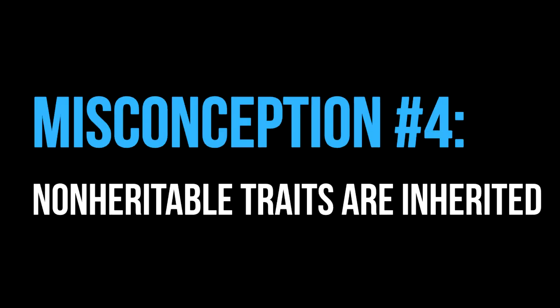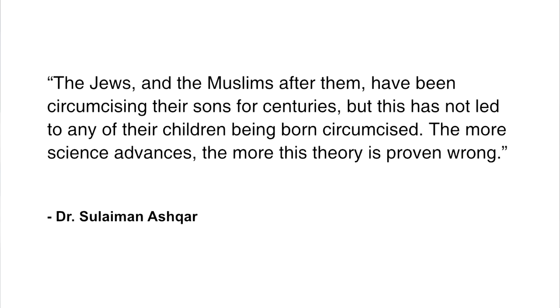Number four: mistaking non-heritable traits for heritable ones. Let's look at another quote from the scholar. He said, 'The Jews and the Muslims after them have been circumcising their sons for centuries, but this has not led to any of their children being born circumcised. The more science advances, the more this theory is proven wrong.' What he is saying here is that if evolution is true, circumcision should result in children being born circumcised, since circumcision has been performed for generations, so children should be born that way.